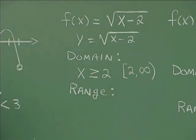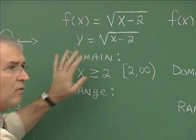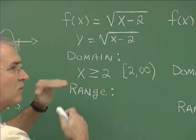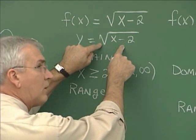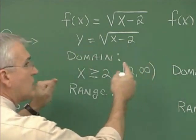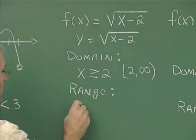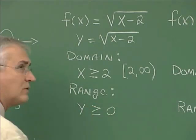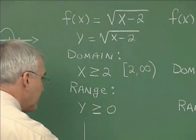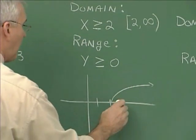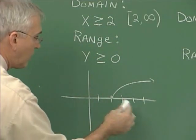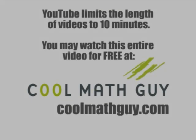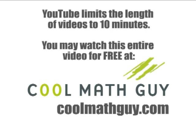The range is a little more elusive when looking at an algebraic form. You have to ask yourself what values can y take on when we are taking the square roots of numbers that are either positive or zero. The square root of zero is zero and the square root of positive numbers are positive numbers, so the range would be y values greater than or equal to zero. The graph goes out forever that way — x values start at 2 and go out to the right, and y values are zero or positive.